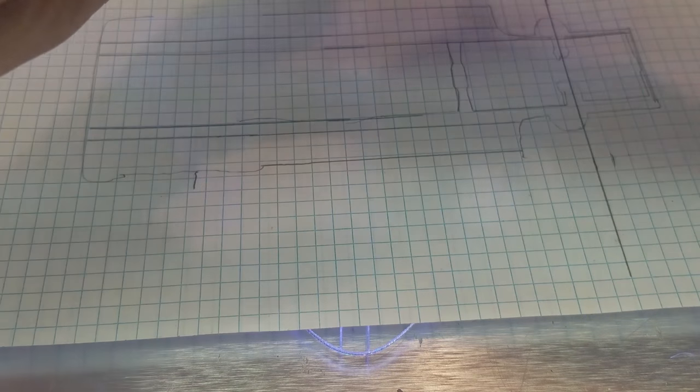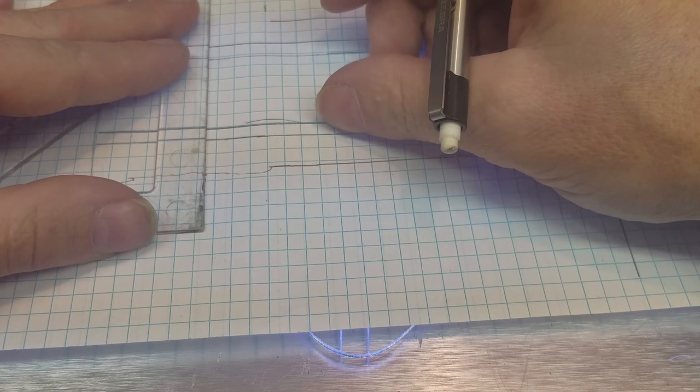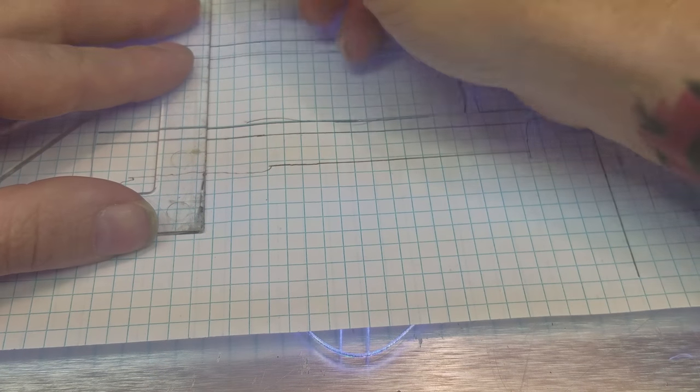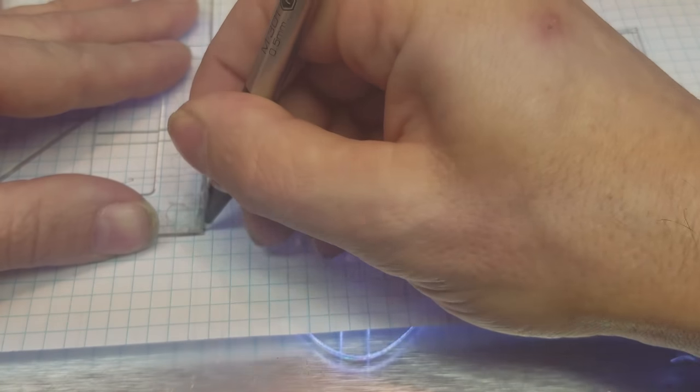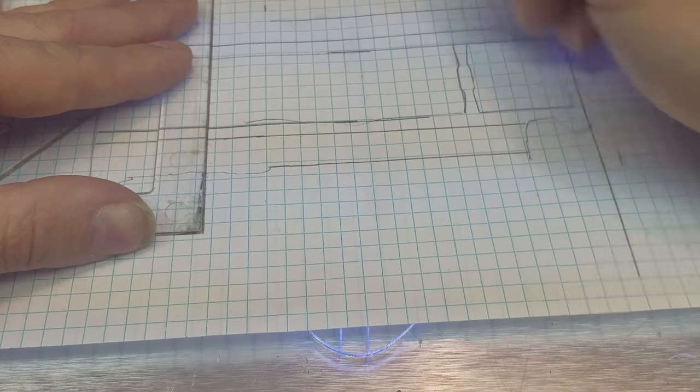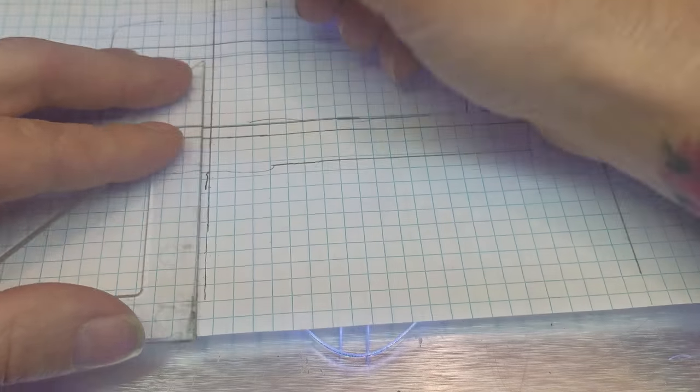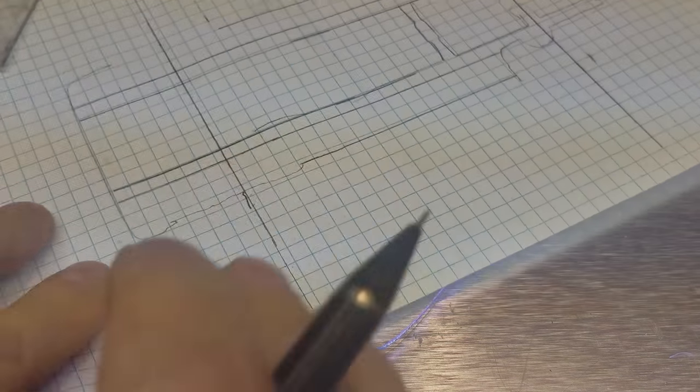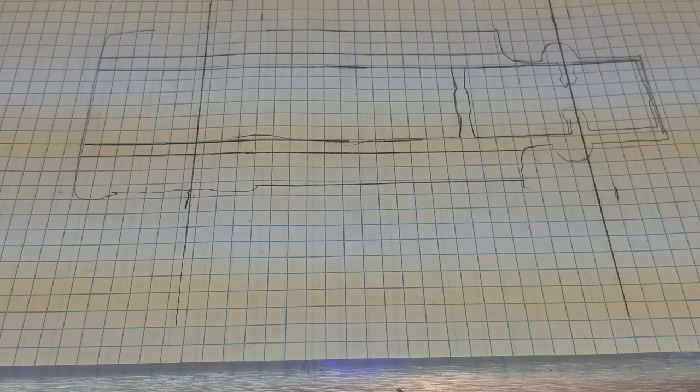So we'll grab our square again, and we can line up where our rear axle goes. We can extend these out. So now we know roughly where all that sits.